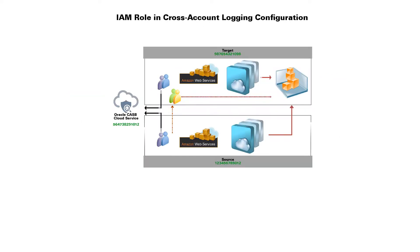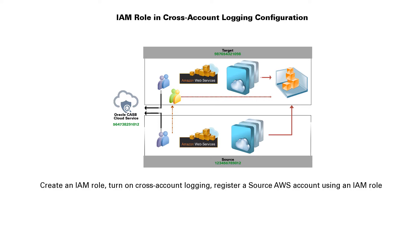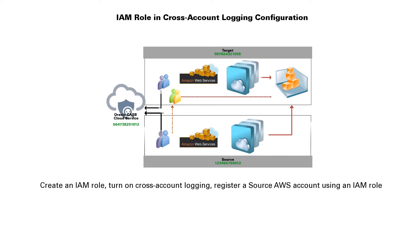For an IAM role in a cross-account logging configuration, you will need the following videos: Turn on CloudTrail and S3 in an AWS account; Create an IAM role and register a target AWS account to Oracle CASB Cloud Service using an IAM role; and Create an IAM role, turn on cross-account logging, and register a source AWS account to Oracle CASB Cloud Service using an IAM role.